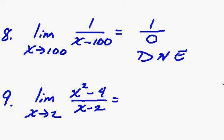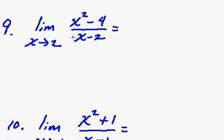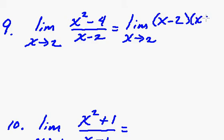Alright, looking at number nine. So we put two in the bottom and we automatically see that we get zero much like the last problem except in this one it's a little bit different. We can factor the top. So we must rewrite the limit. This can be written as x minus two times x plus two over x minus two in the bottom. So when you get zero in the bottom, the first thing you need to do is think about factoring and canceling terms out.